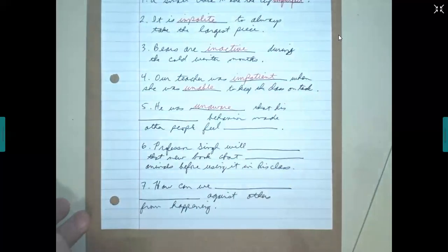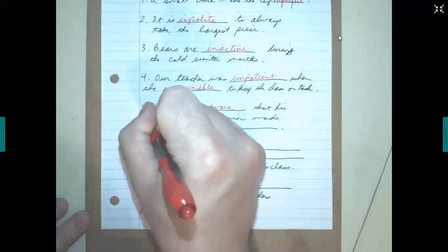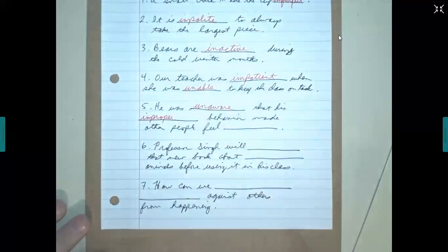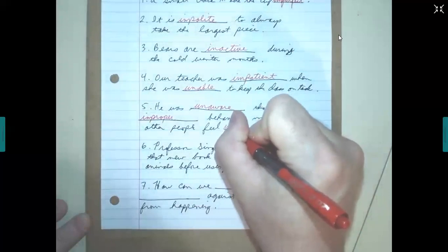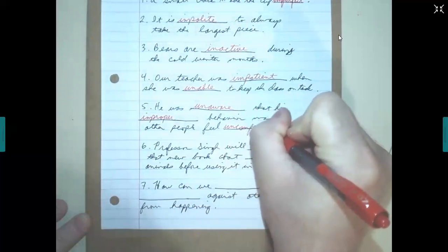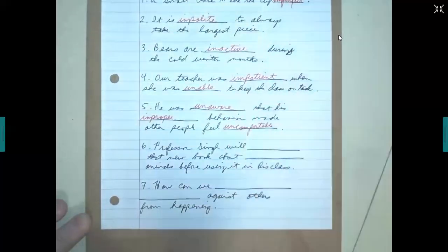We could use one of three possibilities. We could use impolite or improper or inconsiderate. So let's use improper this time. So he was unaware that his improper behavior made other people feel uncomfortable, or not comfortable.